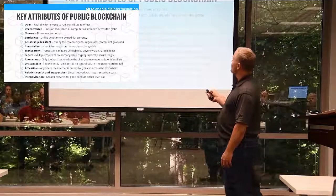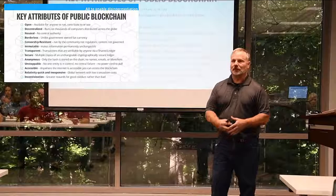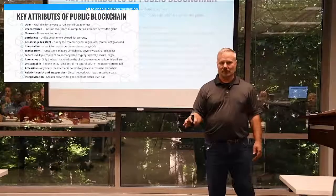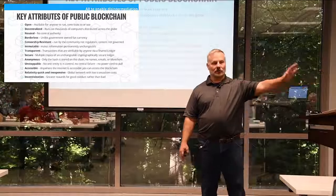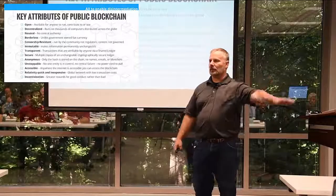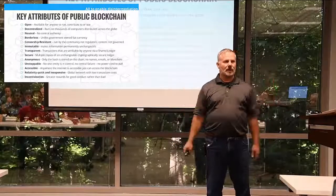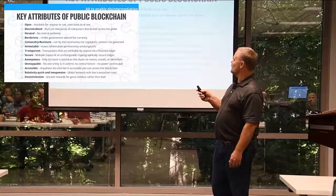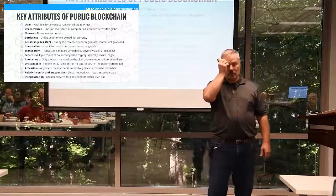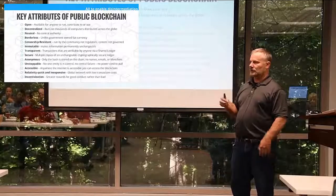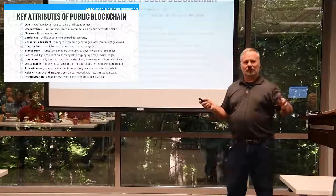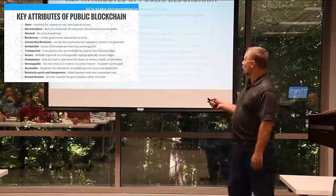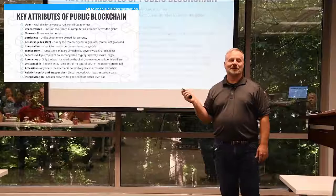Some key attributes of public blockchain specifically: it is open — a completely distributed system where anybody can participate in the network. It's available for anyone to contribute to and use. These are open source products — if you don't want to use an already running public blockchain like Bitcoin or Ethereum, you can download the source code, modify it, and launch your own. It's truly decentralized — distributed across thousands of computers. Ethereum is running on about 16,000 machines spread out across the globe. There is no central authority.